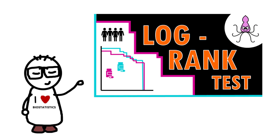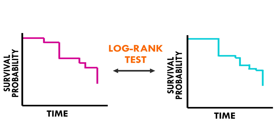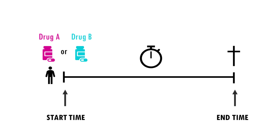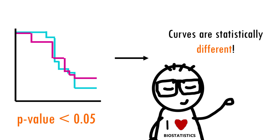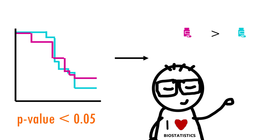Hi everyone and welcome back to Biostat Squid. We previously saw how the log rank test is used to test whether there is a difference between the survival times of different groups. For example, we might compare the survival time of a group of patients who were given drug A versus the survival times of patients who were given drug B.